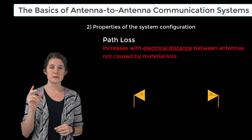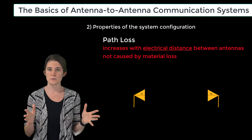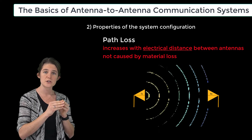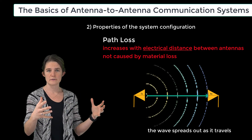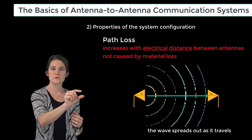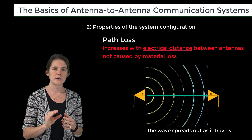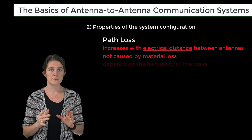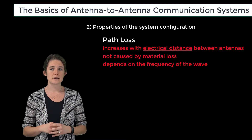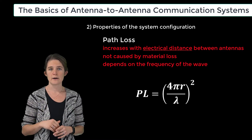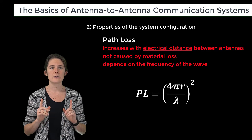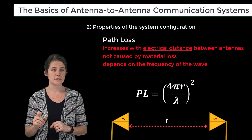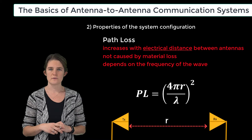Path loss is not due to any material losses of the medium; instead it is due to the fact that an electromagnetic wave with a spatially finite source spreads out as it travels. This spreading results in a reduction of power density, meaning less and less power is captured by the receive antenna. Path loss depends on the frequency of the wave and may be calculated as PL = (4πr/λ)², where PL is path loss, r is the distance between the transmit and receive antennas, and λ is the wavelength of the transmitted signal.